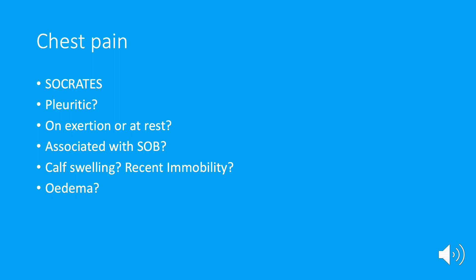Pleuritic chest pain can also be caused by musculoskeletal problems in the chest, which is obviously much less worrying than a PE or pneumothorax. Questions I've found helpful to establish whether it's musculoskeletal: is it worse when you press on the area? Is it worse when you rotate the chest from side to side? I ask patients to put one hand on each shoulder and rotate left to right — if that brings on the pain, it's much more likely to be musculoskeletal in origin.